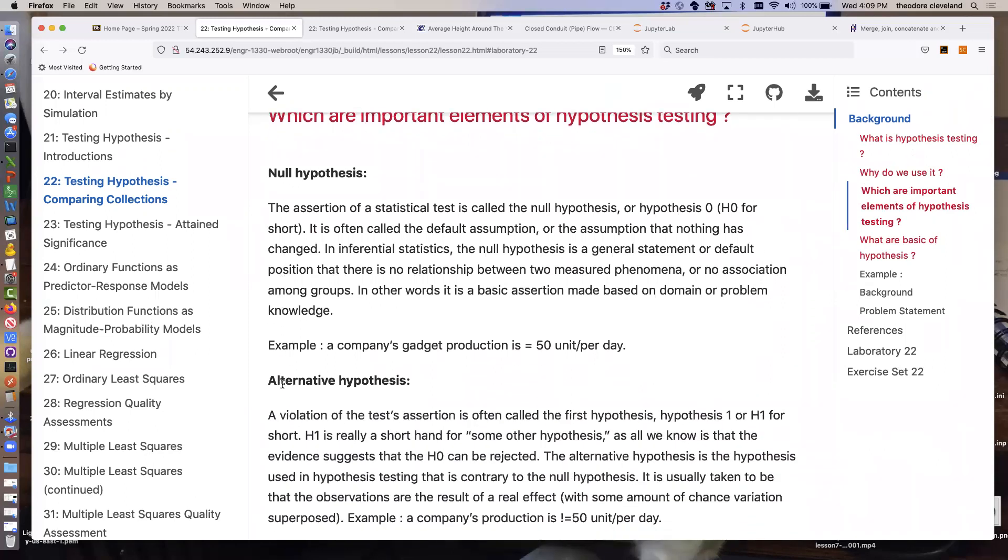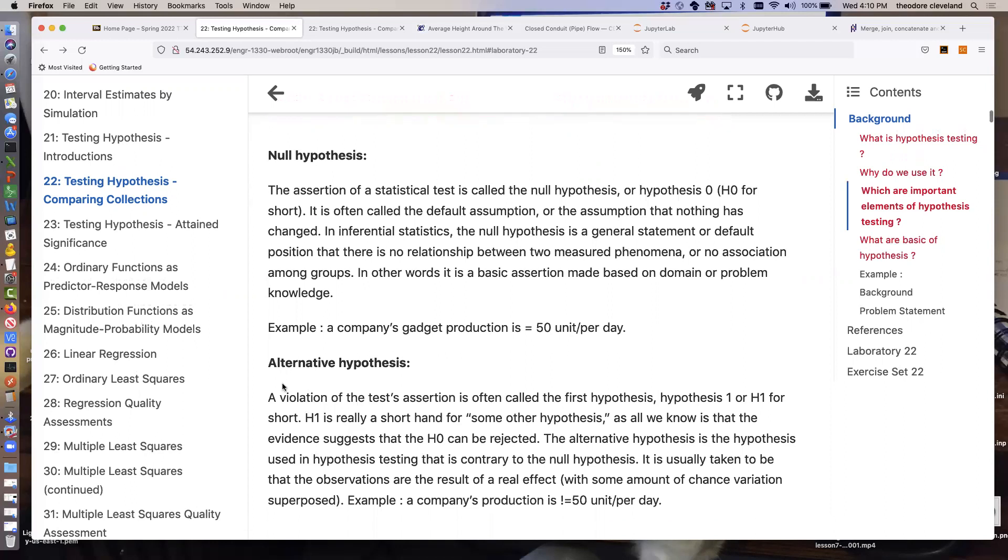There are two parts of a formal hypothesis test. One of the assertions is called the null hypothesis, and that you can think of that as the default assumption, or usually the hypothesis is that things are not different. Versus the alternative hypothesis, which is the case when the null hypothesis is not true. So really think of the null hypothesis as the default condition, the alternative hypothesis is something else.